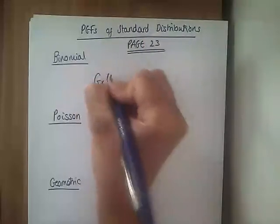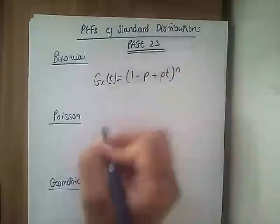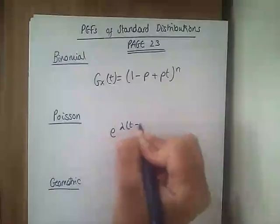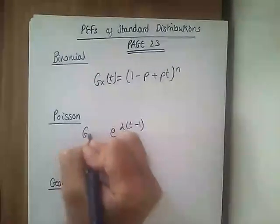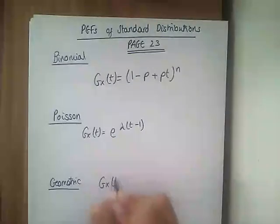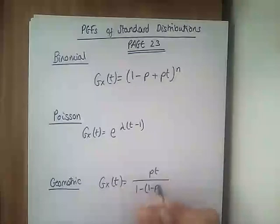But your binomial one is 1 minus p plus pt to the n. Your Poisson is e to the lambda lots of t minus 1.